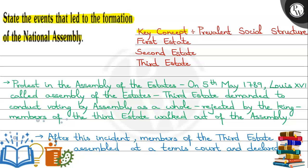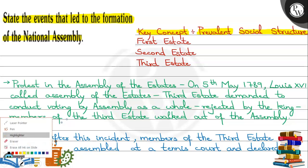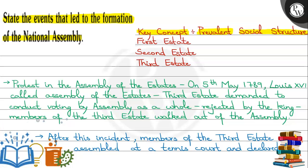Coming to the key concept of the answer, we are going to talk about the prevalent social structure. How was the social structure in France? At that time, in France, there were three estates. The first estate comprised the clergy, the second estate comprised the nobles, and the third estate comprised the commoners. The third estate of France went on to form the National Assembly.